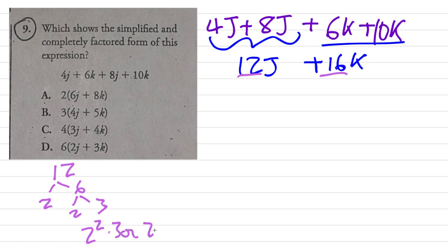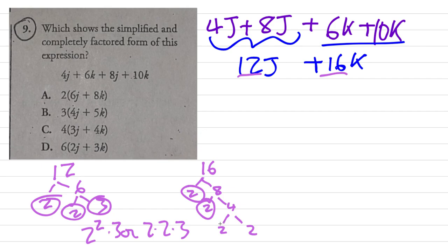And then 16 comes out to 2, 8, 2, 4, 2, 2 - I should be circling the last numbers here, I'm just doing this rather hastily. So that's going to be 2 times 2 times 2 times 2. So what do they have in common? Well, it looks like they each have two twos multiplied, so that's going to be a 4, because 2 times 2 is 4.